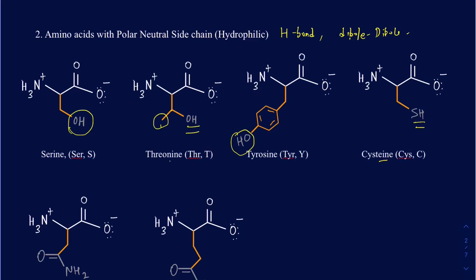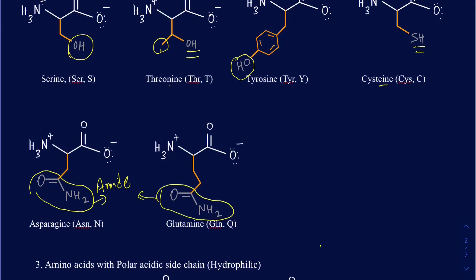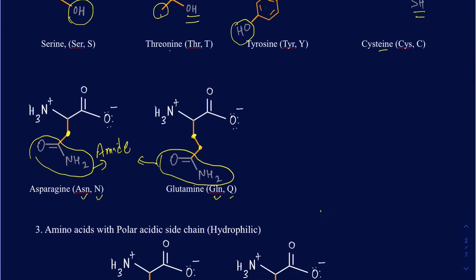Cysteine can make so-called disulfide bonds, so if you want curly or straight hair, that has a lot to do with cysteine — you can make disulfide bonds accordingly to get the curls however you want. Asparagine is another polar amino acid whose sidechain has an amide functional group. Both asparagine and glutamine have an amide functional group. The difference between asparagine and glutamine is how many carbons you have: asparagine has one carbon before the amide group, while glutamine has two carbons before the amide group.